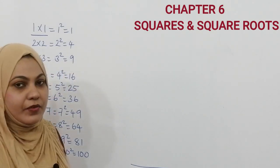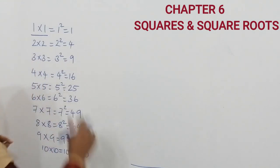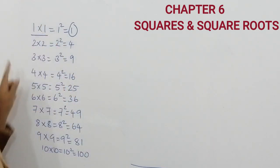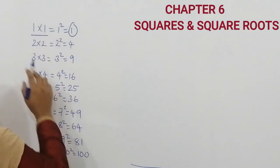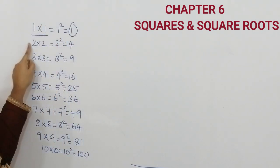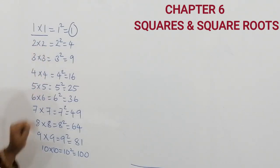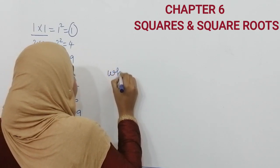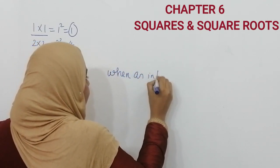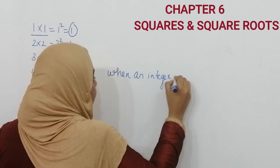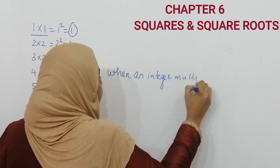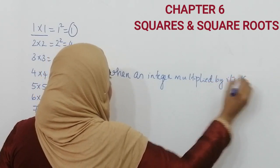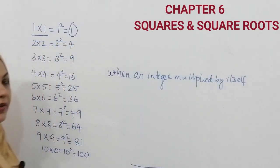So what is the definition of perfect square? Here you can see how you get 1 — when you multiply an equal integer you will get 1. So here 2 is an integer. When you multiply an integer by itself you will get 4. So the definition of perfect square is: when an integer is multiplied by itself, you will get a perfect square.